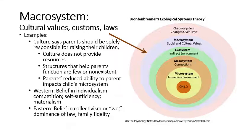The macrosystem refers to cultural values, customs, and laws — the much bigger setting in which the child is raised. In dominant Western culture, the belief is that parents should be solely responsible for raising their children, so we have homes that consist of mom, dad, and children, perhaps with both parents working, and the child is left alone a lot without another loving family member present. Other cultures believe raising a child is the responsibility of parents, extended family, and other people in the community or clan, providing many caring adults to help the child grow and develop.